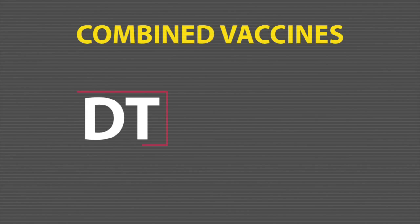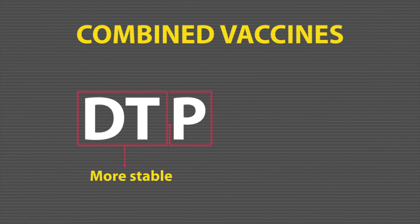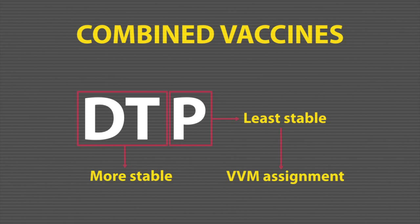In the case of combined vaccines, the VVM assigned is the one of the antigen being the least stable. For instance, in DTP, the least stable component is the pertussis. Therefore, the VVM assigned for DTP is the one based on the thermostability of the pertussis.